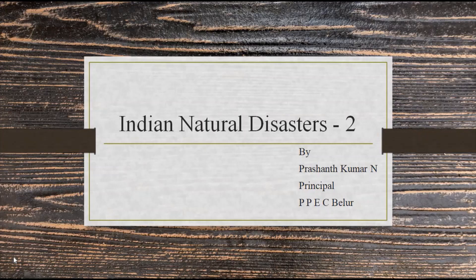Hi there everybody, I am Prashant Kumar. We are discussing about 10th century social sciences. Already we discussed one part of the Indian natural disasters - the meaning of natural disasters, cyclones, flood, and landslide. We discussed what are the causes, effects, and how we can prevent them. Today, let us discuss about another two natural disasters: coastal erosion and earthquake.